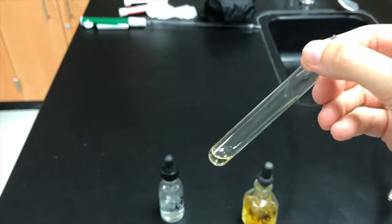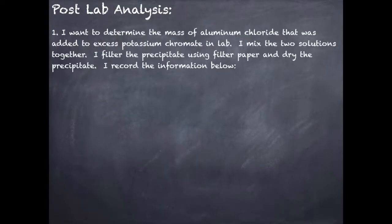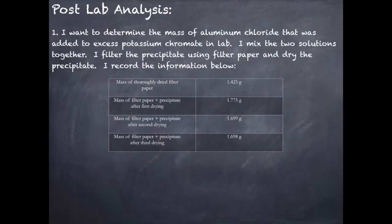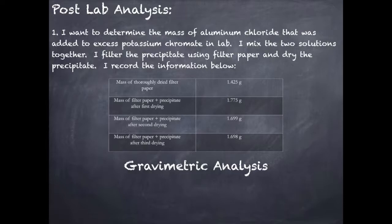For the post-lab analysis, what we did in the lab was qualitative analysis — looking at whether a precipitate forms to identify the solutions. What you're going to do in the post-lab is quantitative analysis: actually measuring the mass of the precipitate formed. This is called gravimetric analysis. You'll be given the mass of the filter paper, the mass of the filter paper plus precipitate after the first drying, after a second drying, and after a third drying. Notice the mass continues to go down until it barely changes between the second and third drying, telling us all the water has been removed. This gravimetric analysis problem is something you can figure out on your own.